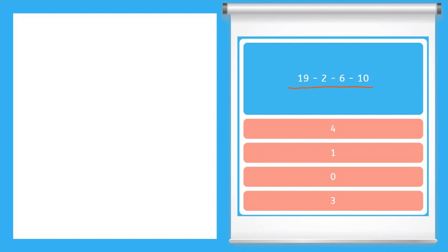So we could do it in order. 19 minus 2 gives us 17. Now I can from there take away 6. 17 minus 6 that will give me 11. And then from there I can take away 10. 11 minus 10 is 1. Final answer.